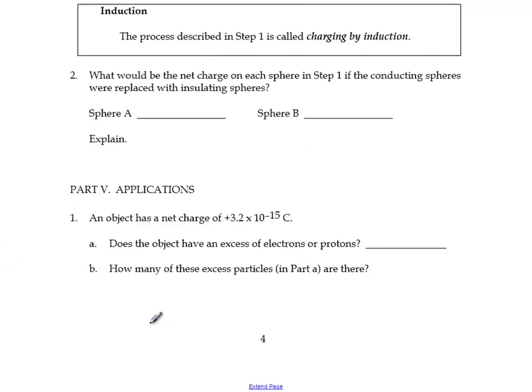And then there's this little math question. An object has a net charge of plus 3.2 times 10 to the negative 15th coulombs. Does the object have an excess of electrons or protons? How many of these excess particles are there? Remember, the fundamental charge is 1.6 times 10 to the negative 19th coulombs. So you got to figure out how many of these - and this is the charge of a proton or the charge of an electron, depending on if it's positive or negative - how many of these fit into that?